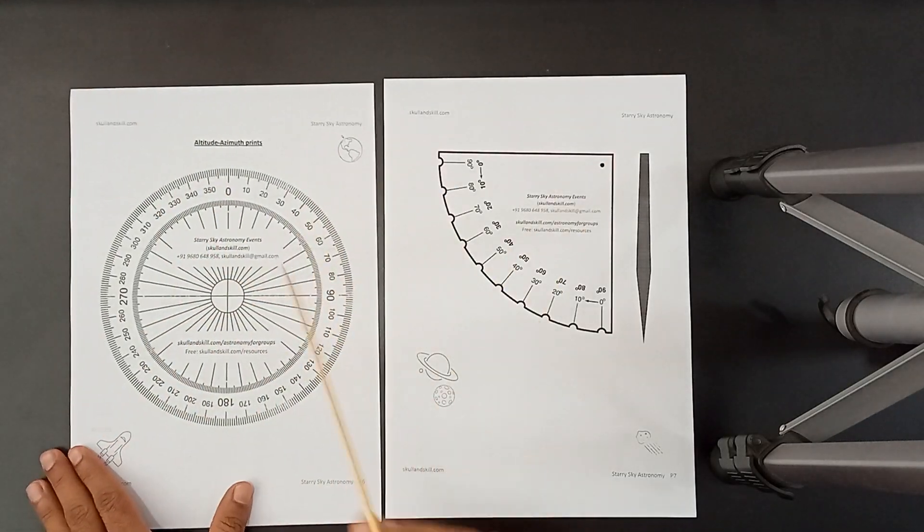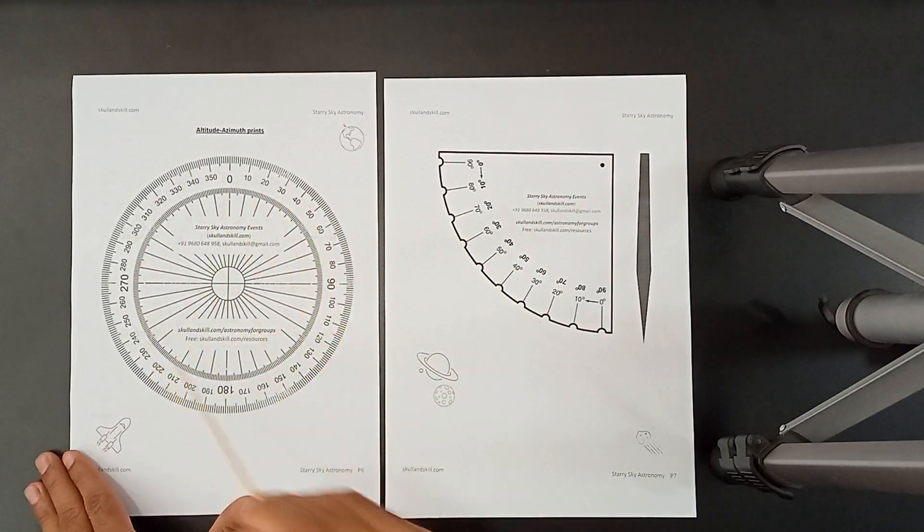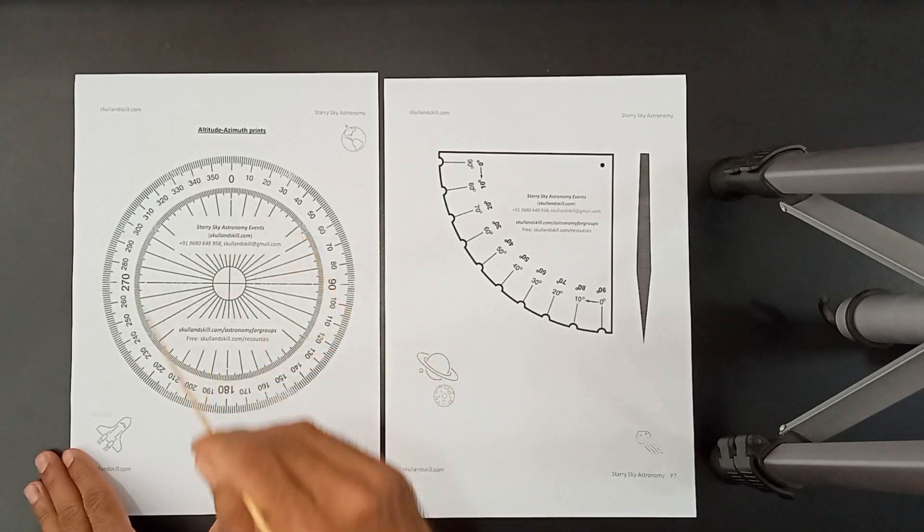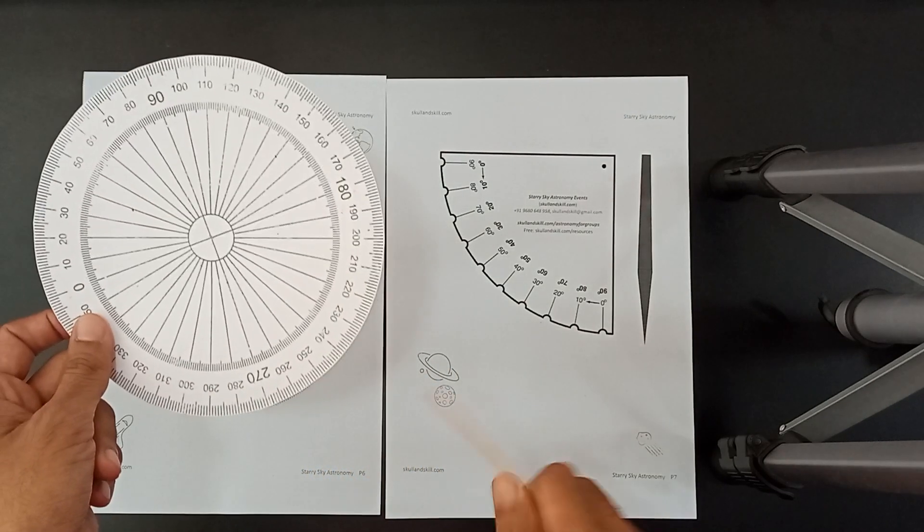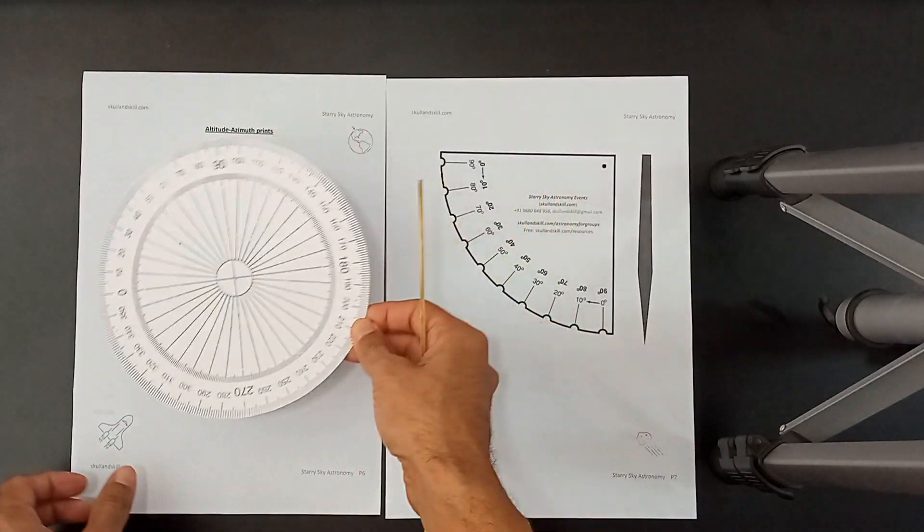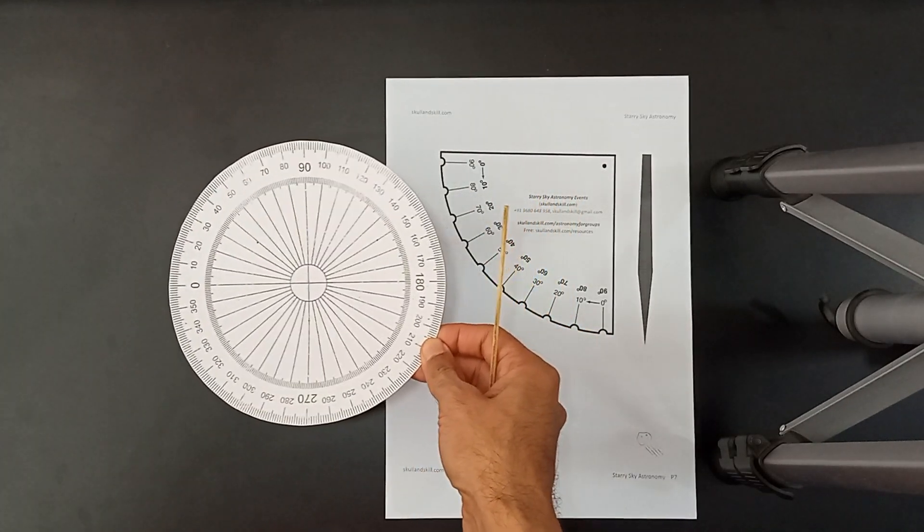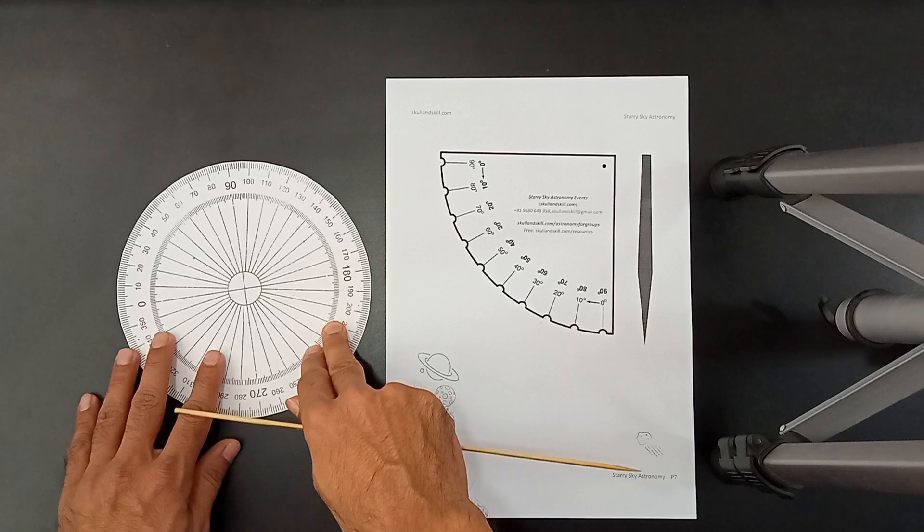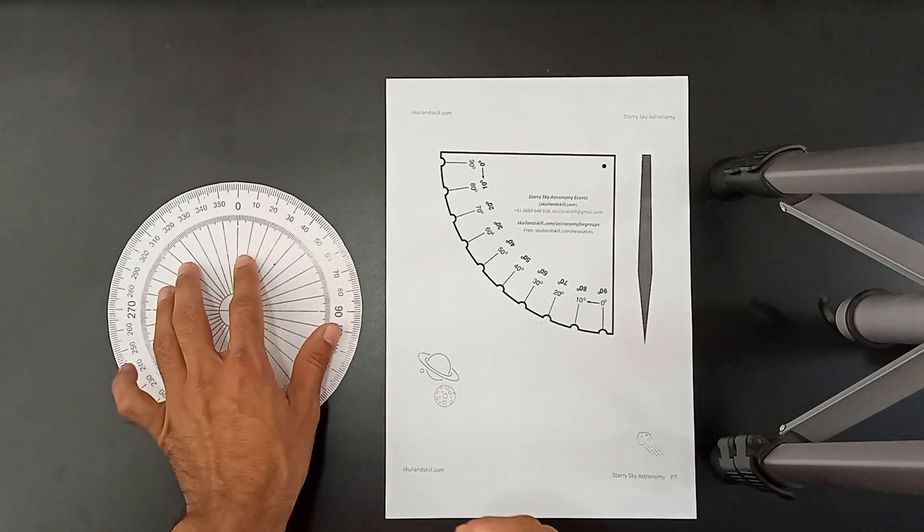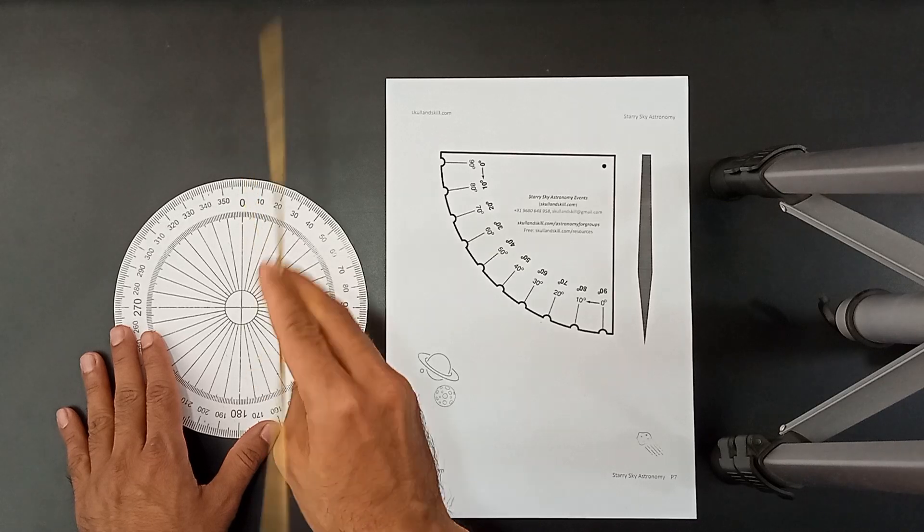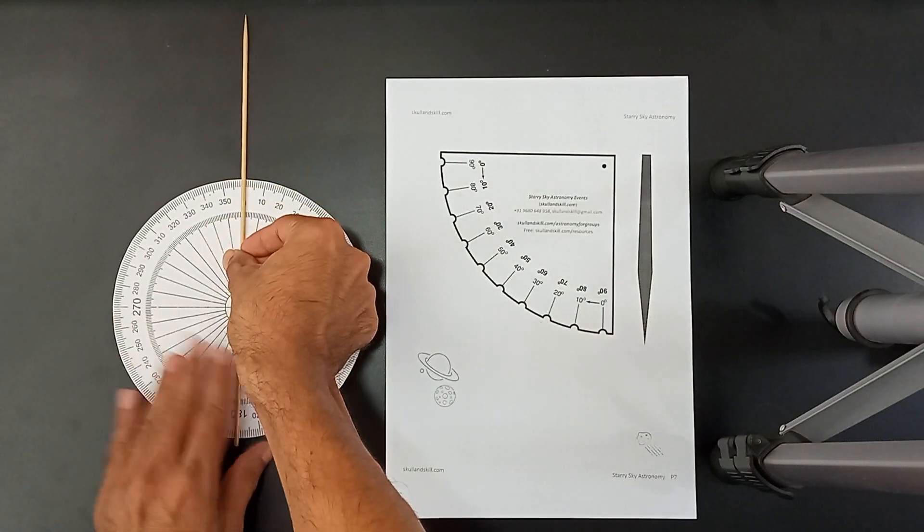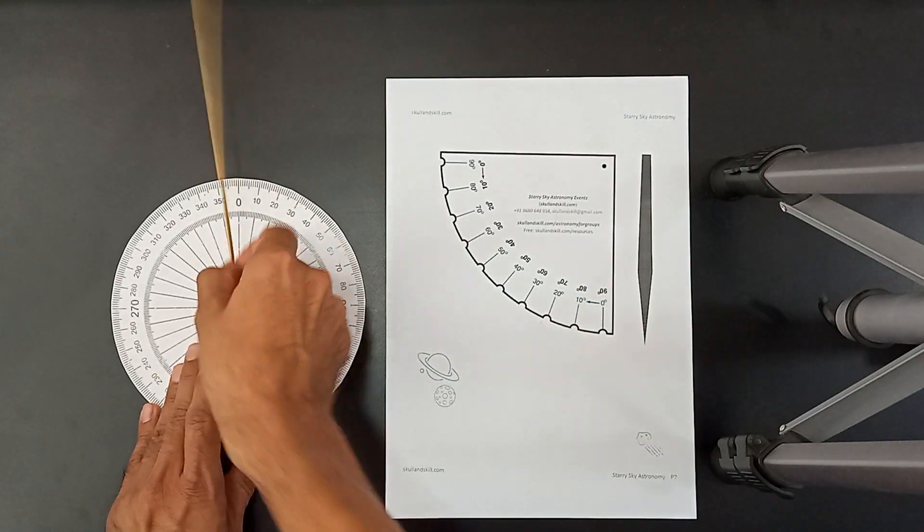After you have taken this print out, you have to cut this circle out from here, from this page. We already have a circle for you. So let's put this aside for now. So this circle is what we have right now. And orient it, orient this 0 towards the north direction. You have to keep it like that.